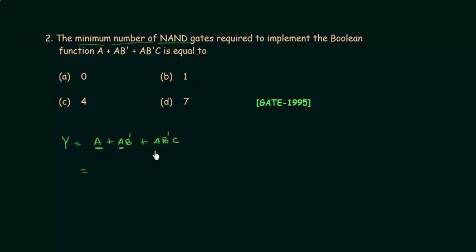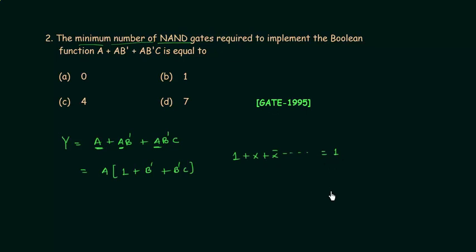We can see that a is common in all three terms, so we factor it out: a AND (1 OR b' OR (b' AND c)). Since 1 OR anything equals 1, this simplifies to a AND 1, which equals a. So the output y is simply equal to a.